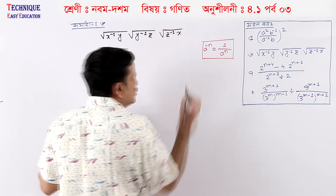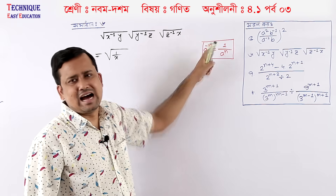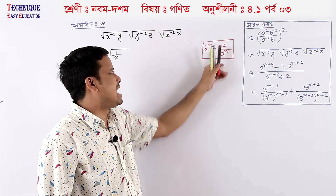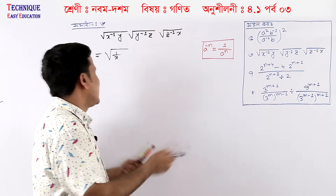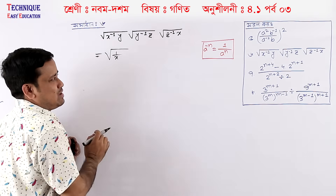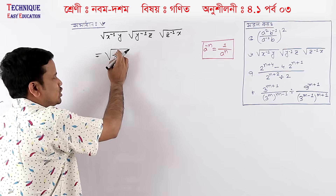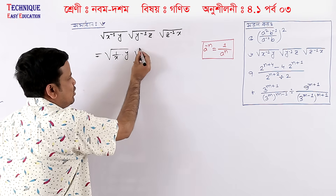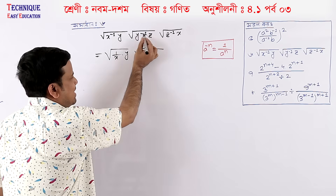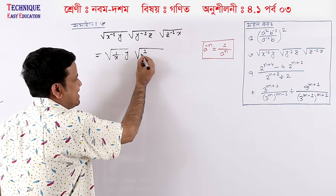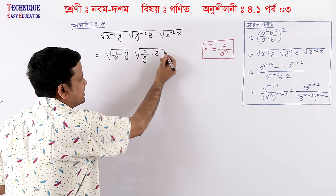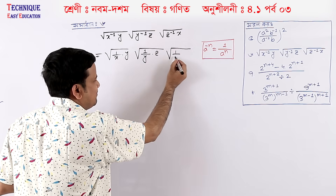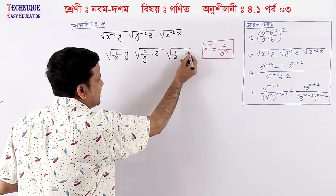Look at the sutra: a to the power minus n, the sutra gives one by a to the power n. Similarly, x to the power minus n gives one by x into y; y to the power minus n gives one by y into z; and z to the power minus n gives one by z into x.